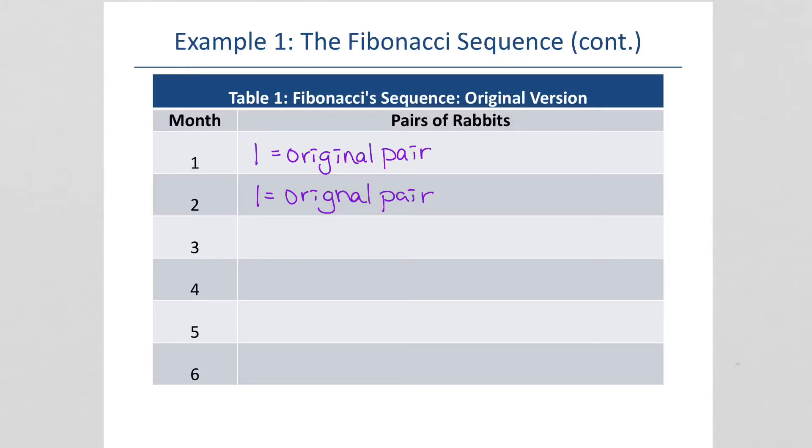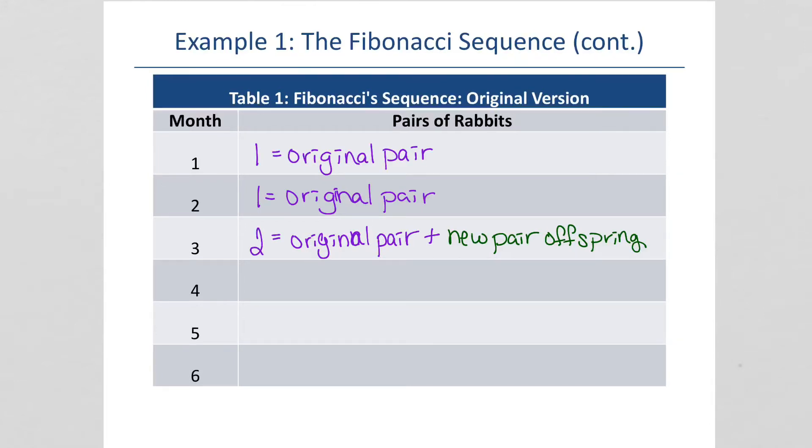So, the third month, we now have the original pair. Plus, we have the new pair of offspring. So, that's one pair plus one pair is two pair.